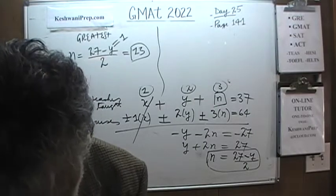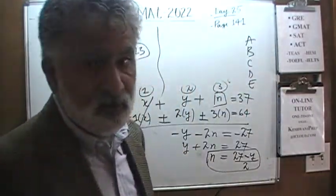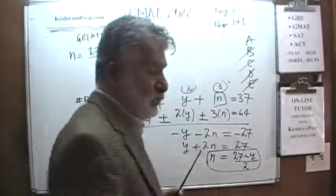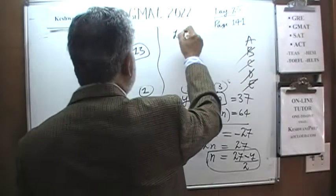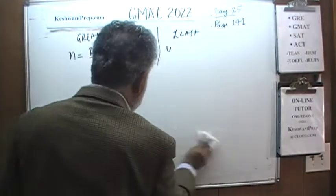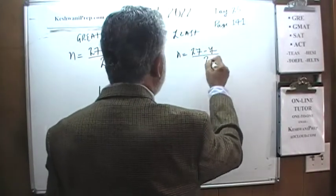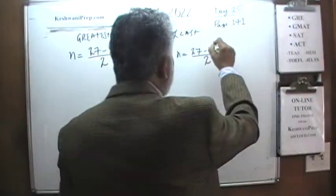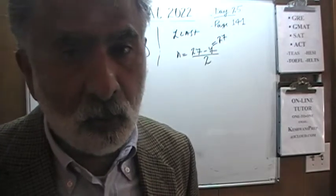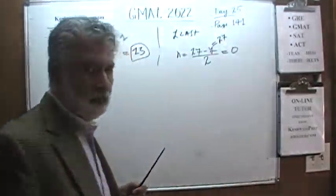Looking at the answer choices, since the largest possible value of n is 13, we can immediately narrow down the options. For the least possible value: if y = 27, then n = (27 − 27)/2 = 0. So n = 0 is the minimum. Let's verify: if n = 13, y = 1, then x = 37 − 14 = 23, and 3·13 + 2·1 + 1·23 = 39 + 2 + 23 = 64. ✓